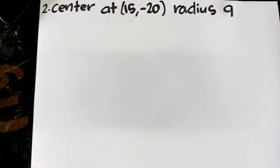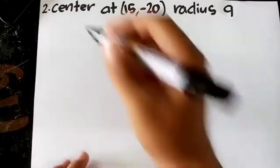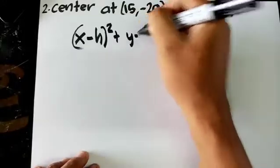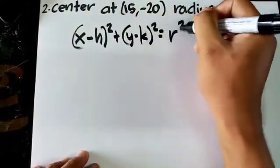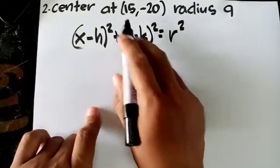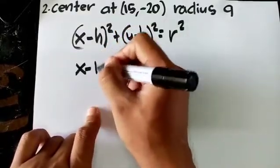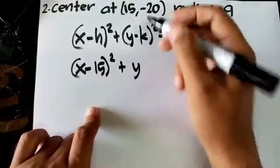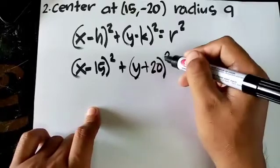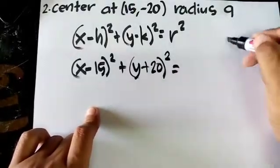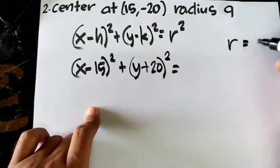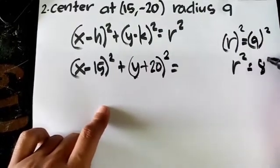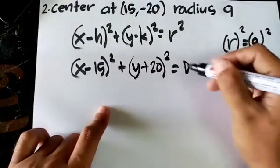Number 2: center at (15, -20), radius 9. Substitute directly into (x-h)² + (y-k)² = r². Since the x-coordinate is positive it becomes (x-15)², and since the y-coordinate is negative it becomes (y+20)². So the answer is (x-15)² + (y+20)² = 81.